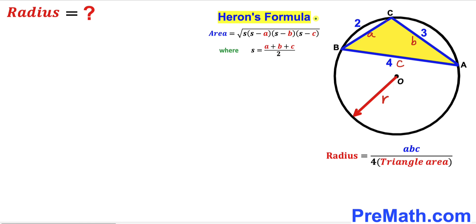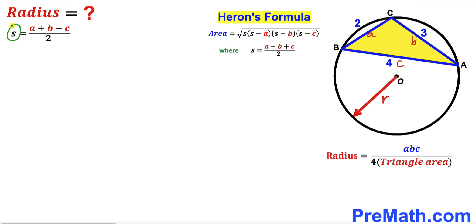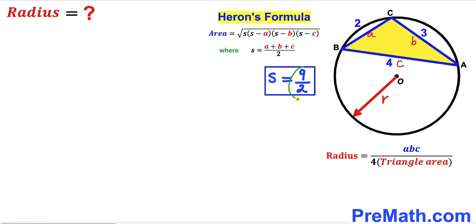We are going to use Heron's formula to calculate the area of this yellow shaded triangle ABC. The formula is: area equals the square root of S times (S minus a) times (S minus b) times (S minus c), where S equals (a + b + c) divided by 2. So S is equal to (2 + 3 + 4) divided by 2, which simplifies to 9 divided by 2.